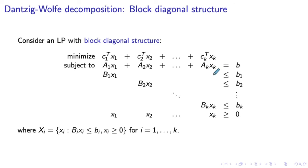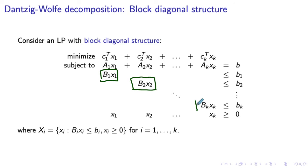The shared resources are represented by the common constraints that involve all the variables. These are our complicating constraints. On the one hand, the company needs to decide how to distribute the common resources between the different divisions, which is represented by these complicating constraints. On the other hand, each division needs to allocate the resources that they have to manufacture their products in the most efficient way. This block diagonal structure corresponds to our easy constraints — it is block diagonal because the non-zero entries in the constraint matrix can be described by diagonal blocks of non-zero entries; everything else would be zeros.